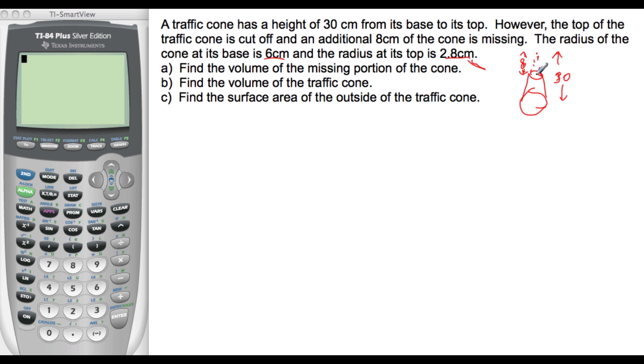So find the volume of the missing portion of the cone, just the top. Let's redraw that so it's easier to see. The top of the cone has a height of 8 and it has a radius of 2.8. The volume of the cone is 1 third area of the base, which is pi, 2.8 squared.